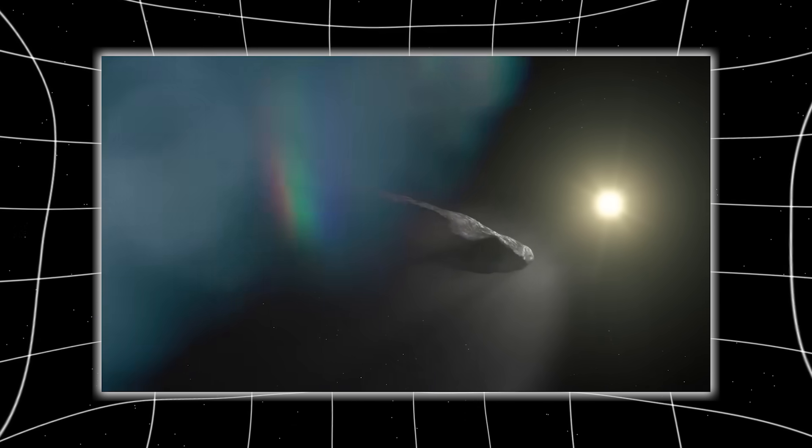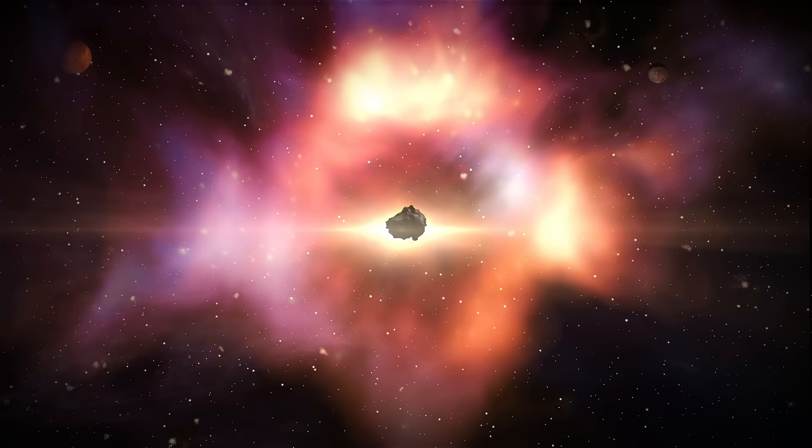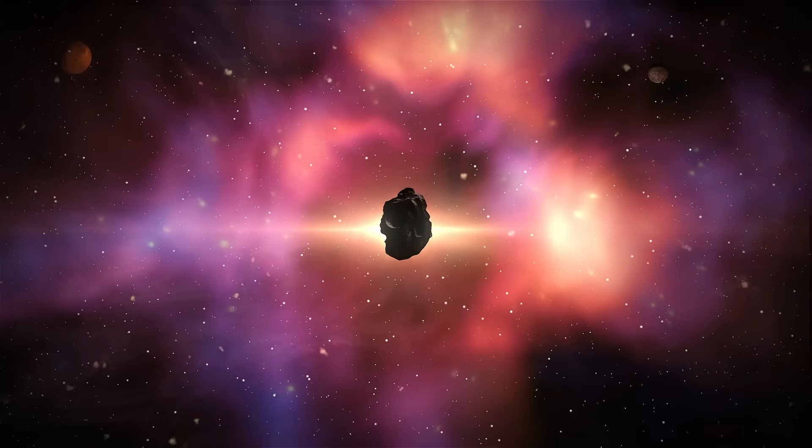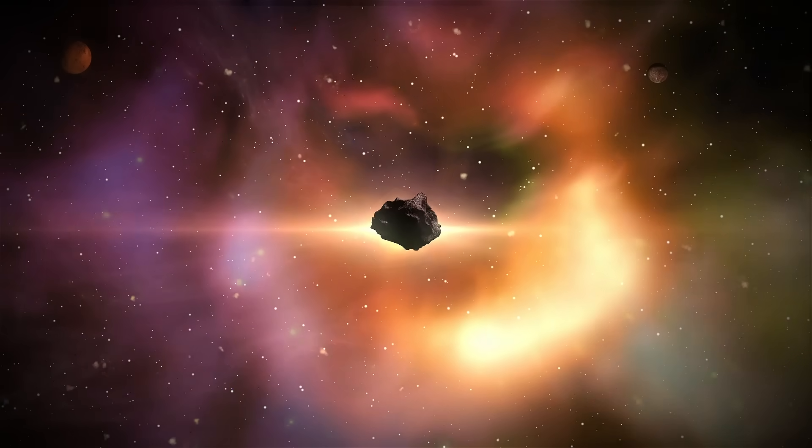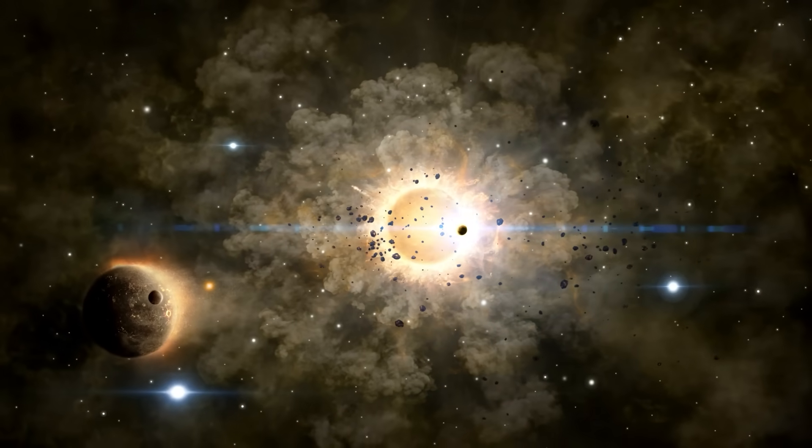The jets looked stronger. The structure more defined. The rhythm of its glow no longer matched the pattern from before the blackout. Whatever happened behind the sun, it altered the object in ways no one could explain, as though the sun's shield had offered it the privacy it needed to change, or to prepare.